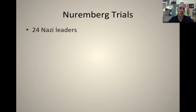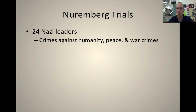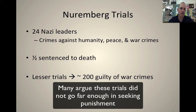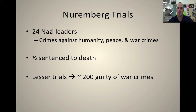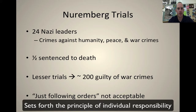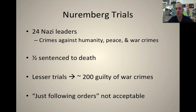Now, the Nuremberg Trials: 24 Nazi leaders are put on trial for crimes against humanity, crimes against peace, and war crimes. Half are sentenced to death. In the lesser trials, about 200 foot soldiers were found guilty of war crimes. Even now, evidence continues to surface about Nazi perpetrators being convicted of war crimes in their 80s and 90s. The trials also set the precedent that just following orders is not an acceptable response — killing men, women, children, and elderly people because your superiors told you to is not a good excuse. This is going to come up again on the flip side with the United States not too much longer after this.